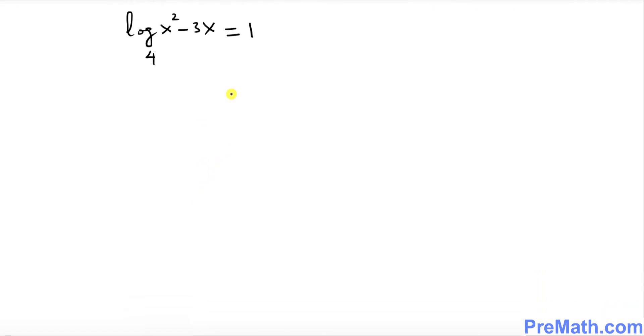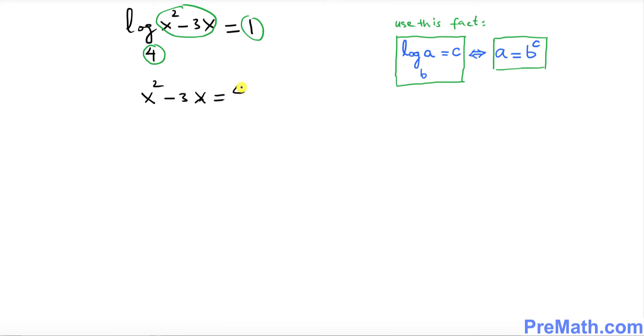So this is in a logarithmic form. We want to move it, we want to convert it to exponential form, and we will be using this fact on the right hand side. This fact states that if you want to convert, you want to go from logarithmic form to an exponential form, we can do the same thing. This is our base b, this is our a, this part is our c.